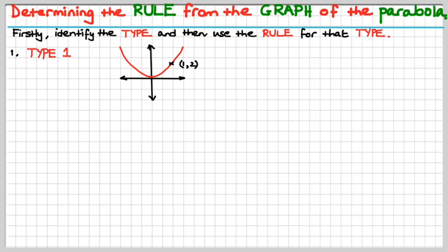So type 1, that's this little beastie here. Can you have a good look at that now? How would you describe this parabola? Well, one thing you can say, it's symmetrical about the y-axis. And it passes through the origin. That's how you characterize a type 1.